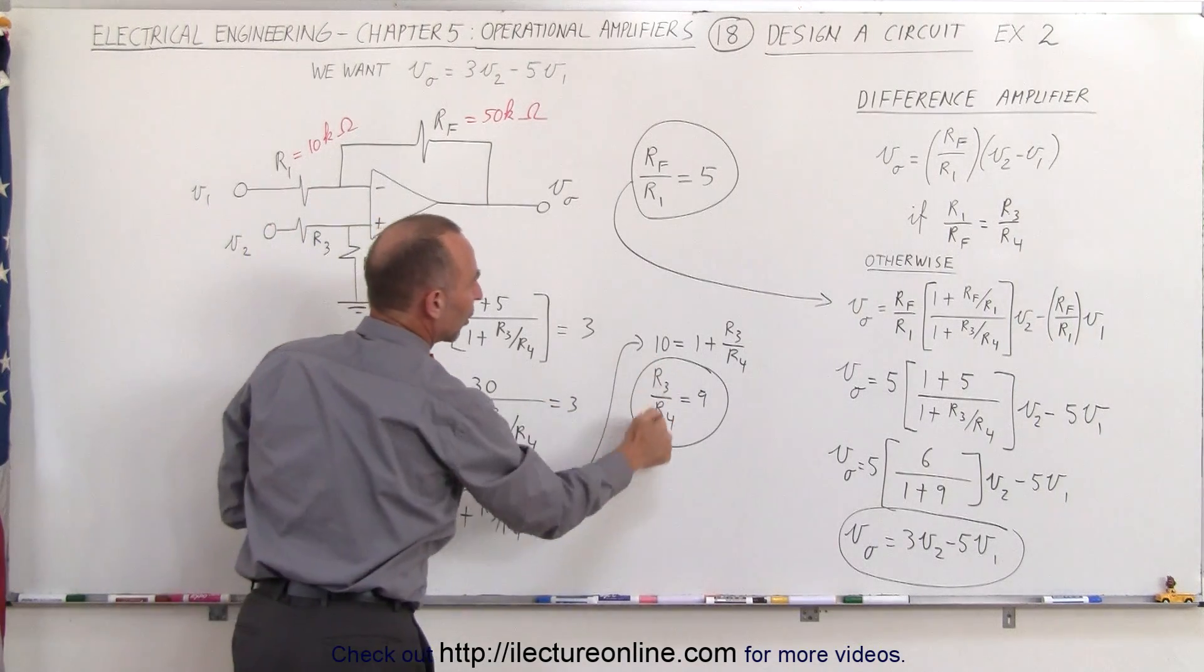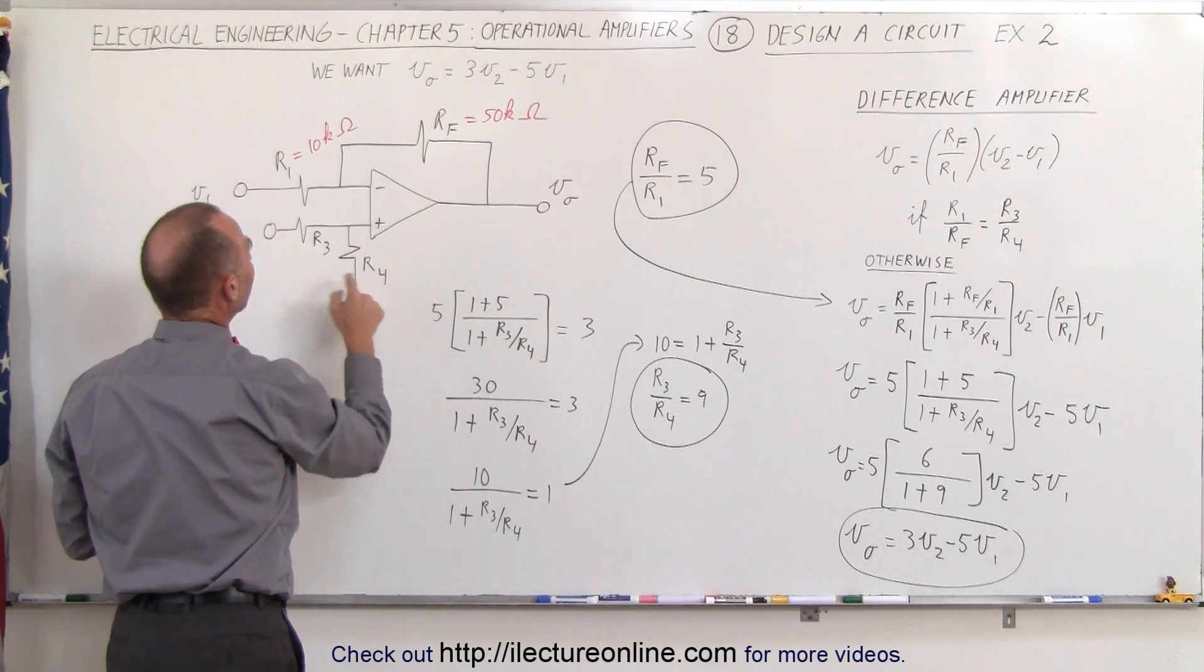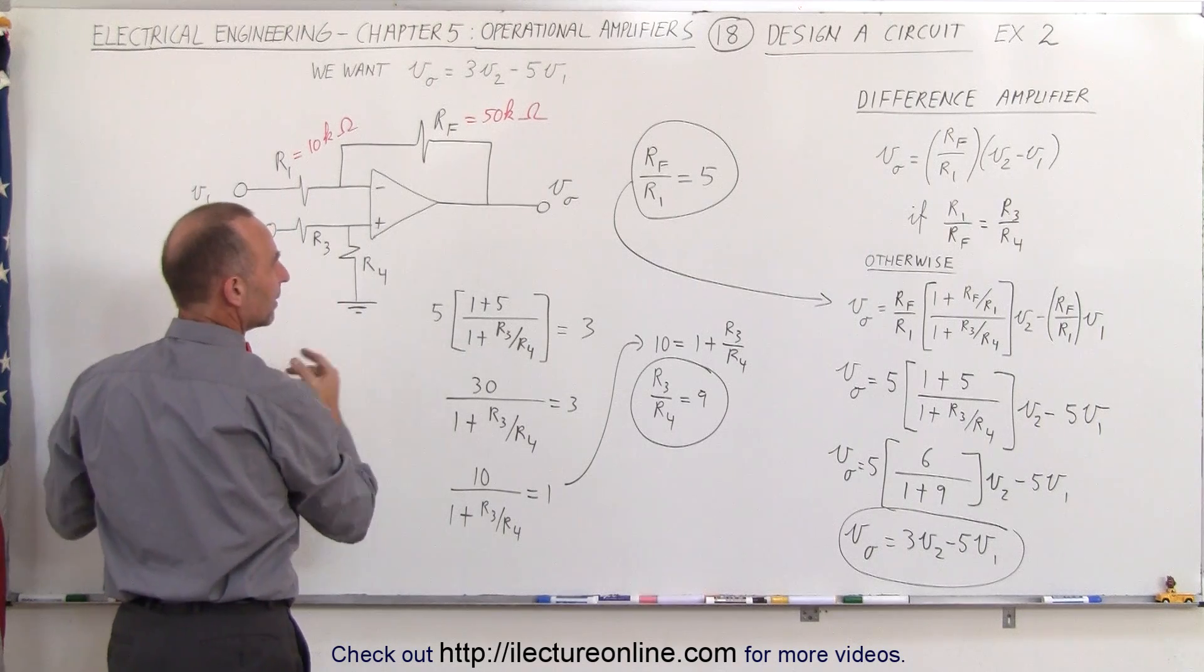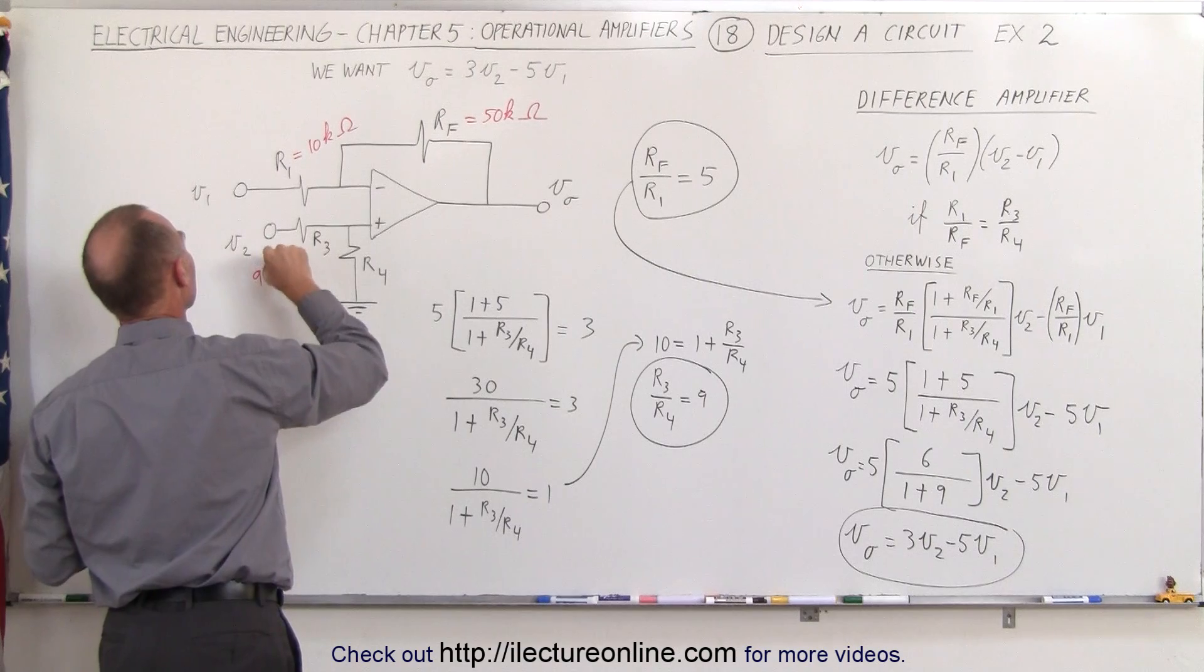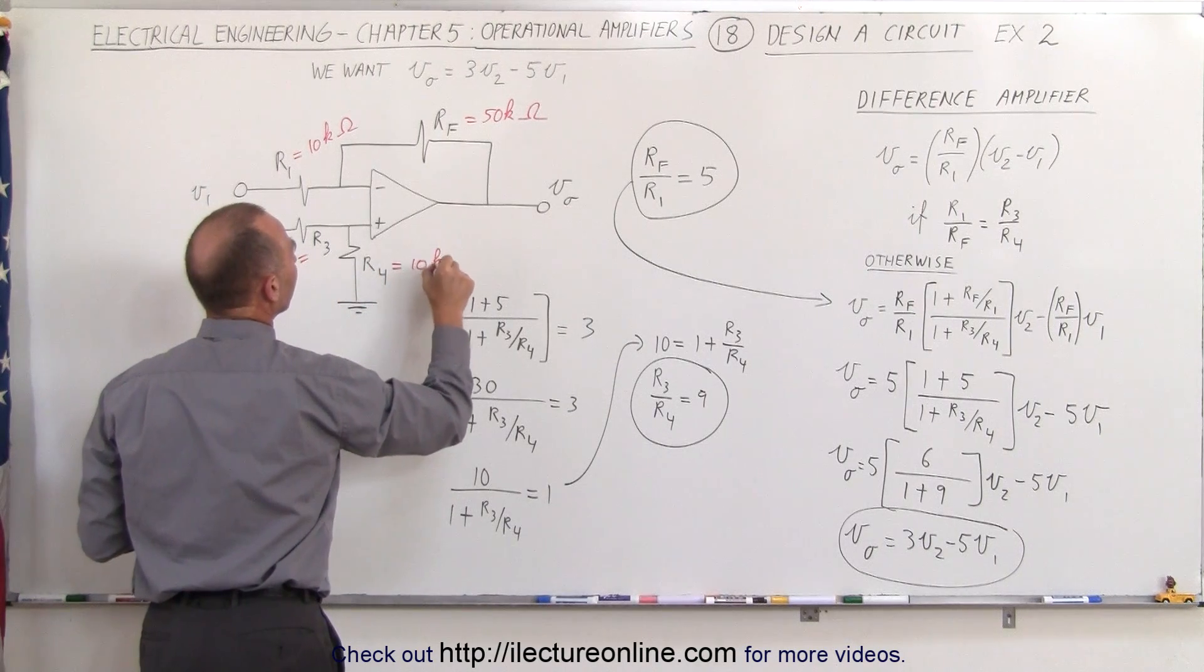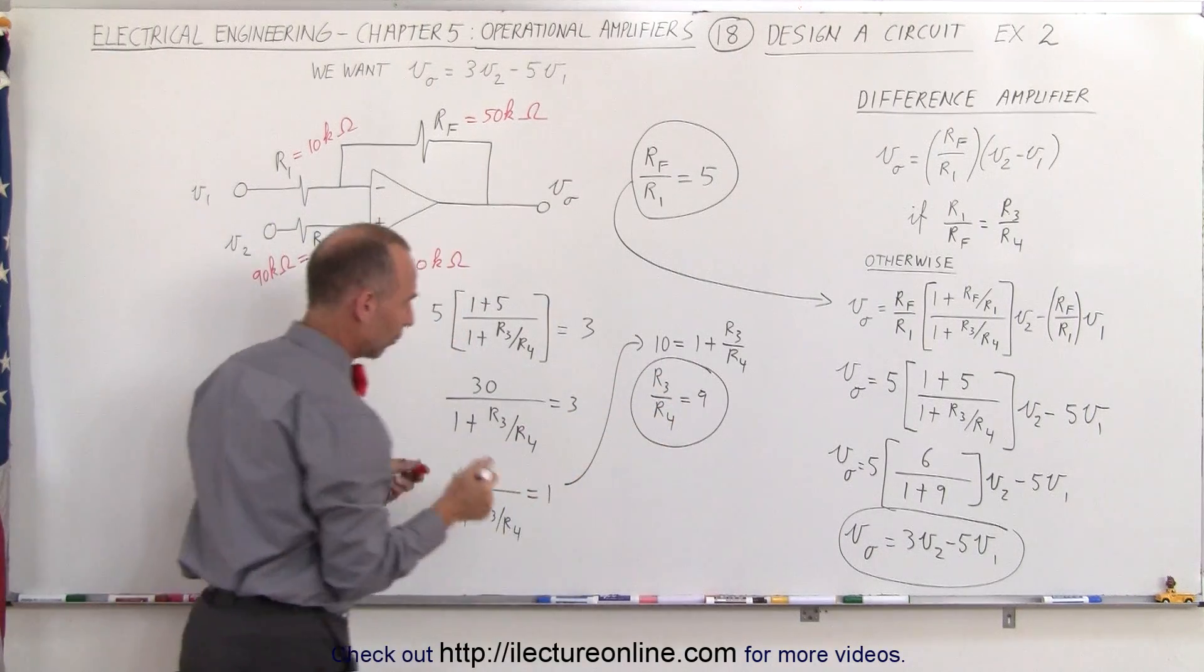Next we want the ratio of R3 to R4 to be equal to 9. So R3 to R4 should be equal to 9 and we'll make R3 9 times R4 so let's make this equal to 90 kiloohms and R4 to be equal to 10 kiloohms. So this will give us a 9 to 1 ratio for R3 divided by R4.